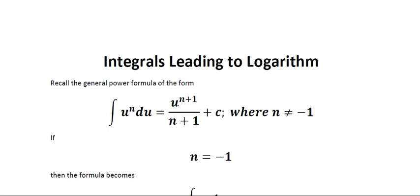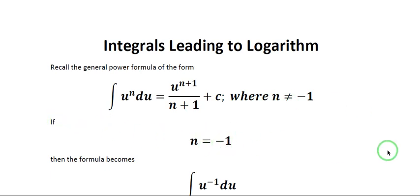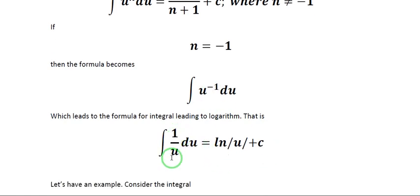Good day to all my students in integral calculus. Today we are going to discuss integrals leading to logarithm. Recall the general power formula: the integral of u to the n du is equal to u raised to n+1 all over n+1 plus c, where n is not equal to negative 1. If n is equal to negative 1, the formula becomes the integral of u to the negative 1 du, where u to the negative 1 is just 1 over u. So the integral of 1 over u du is equal to ln of the absolute value of u plus c.